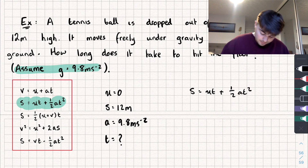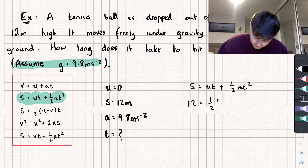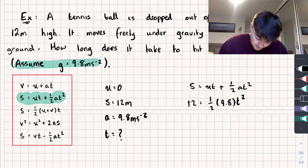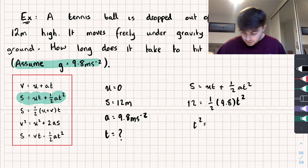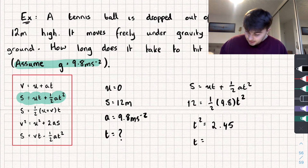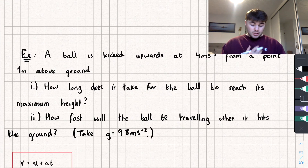Substituting in: 12 = 0 × t + ½ × 9.8 × t². Multiplying both sides by 2 and then dividing by 9.8, we get t² = 2.45. Taking the square root gives t = 1.56 seconds to two decimal places. Not too difficult.